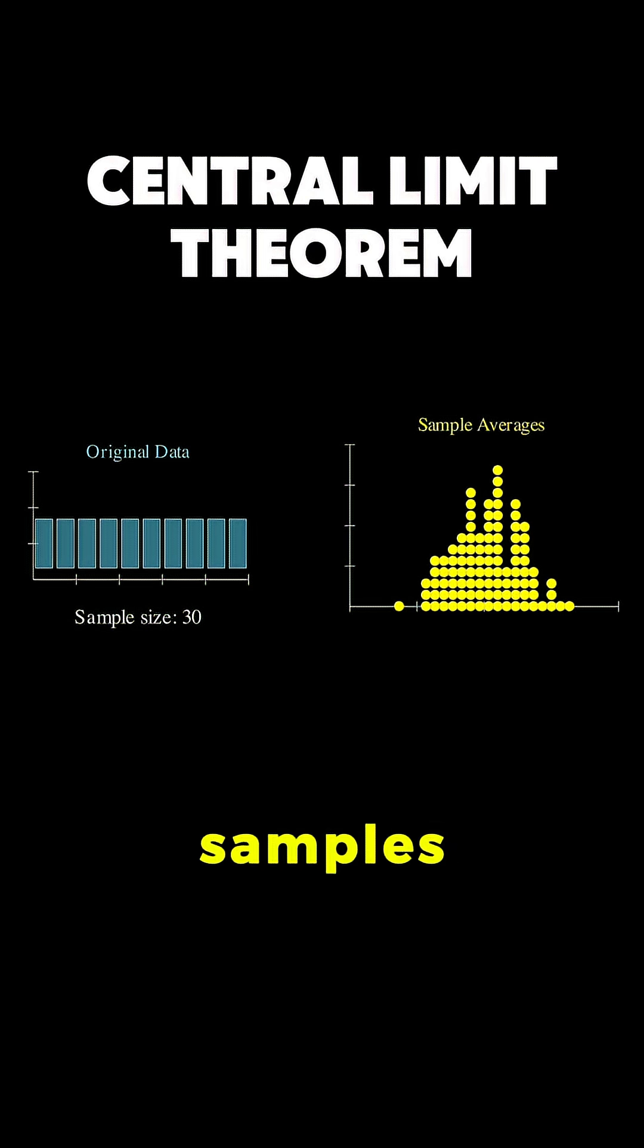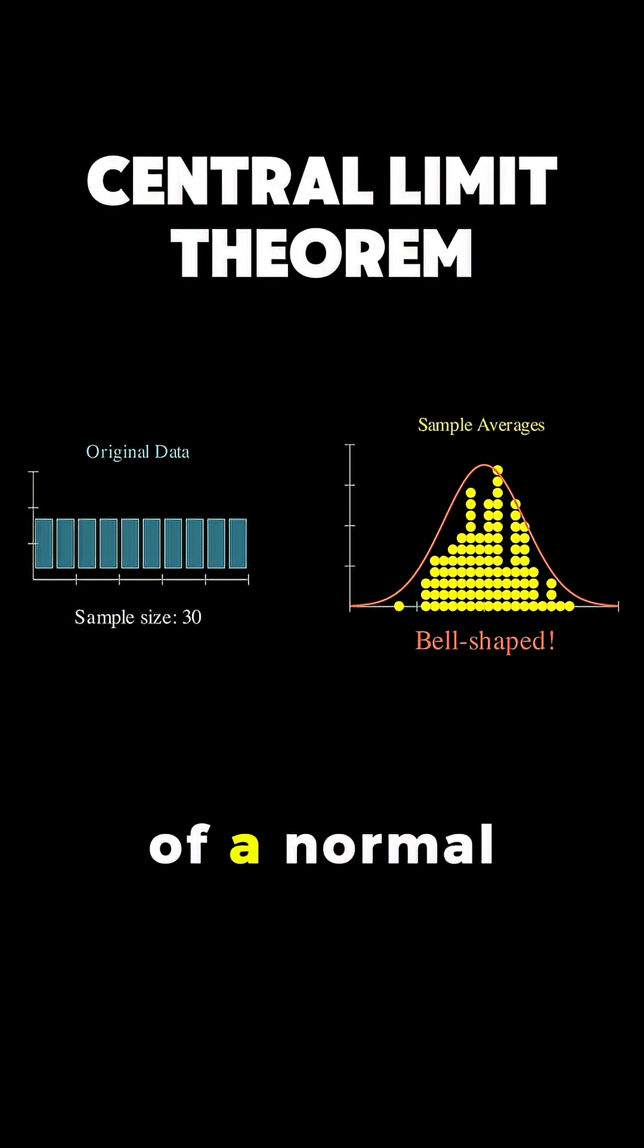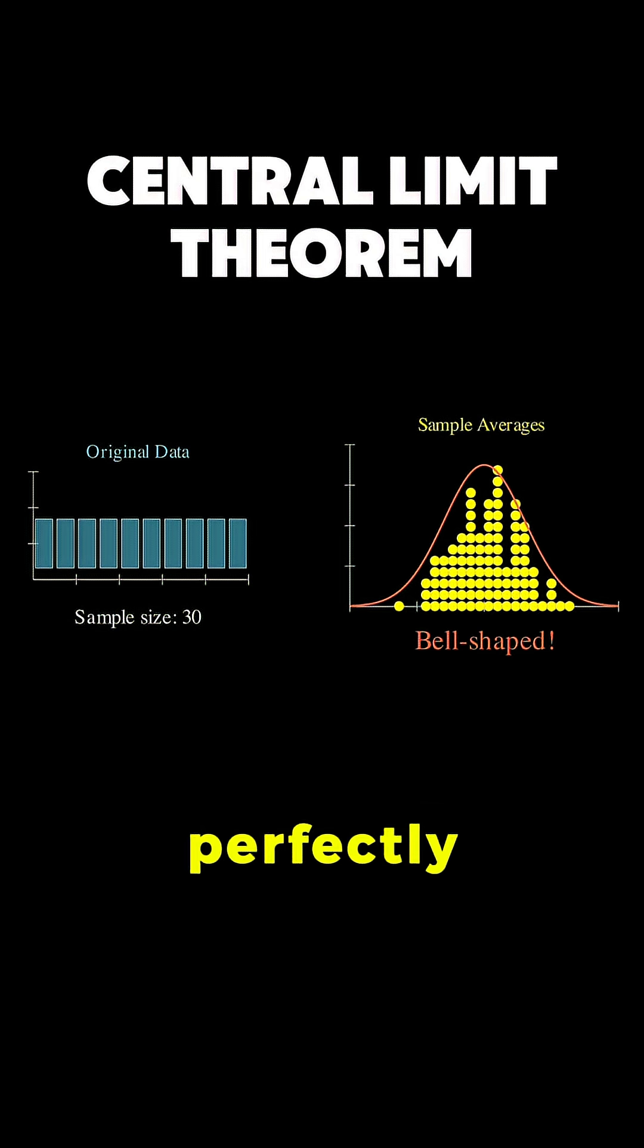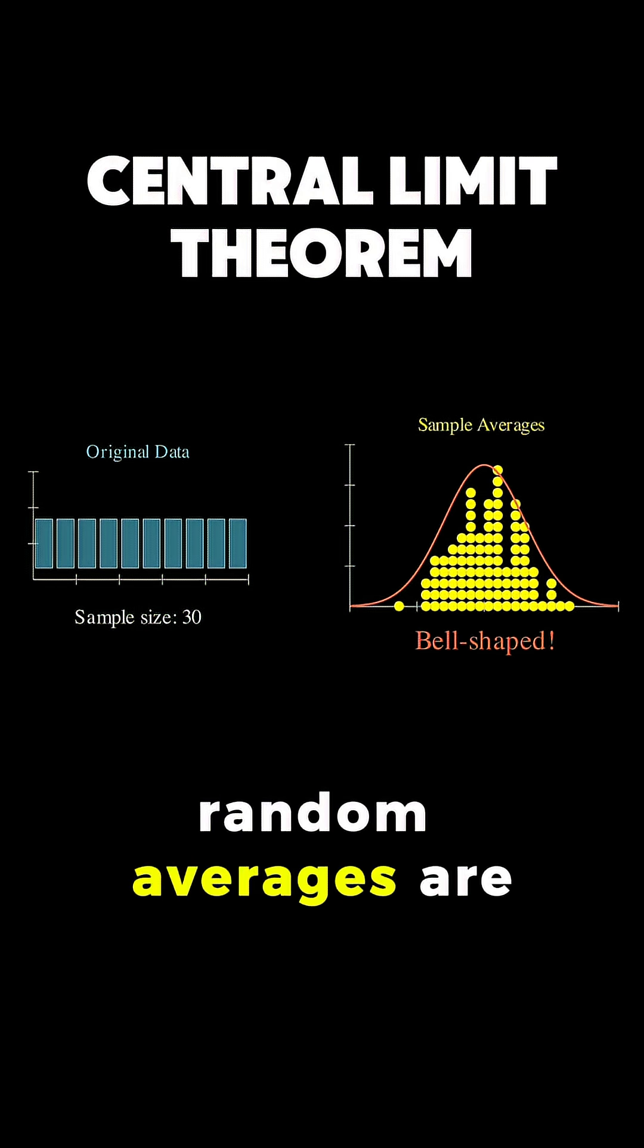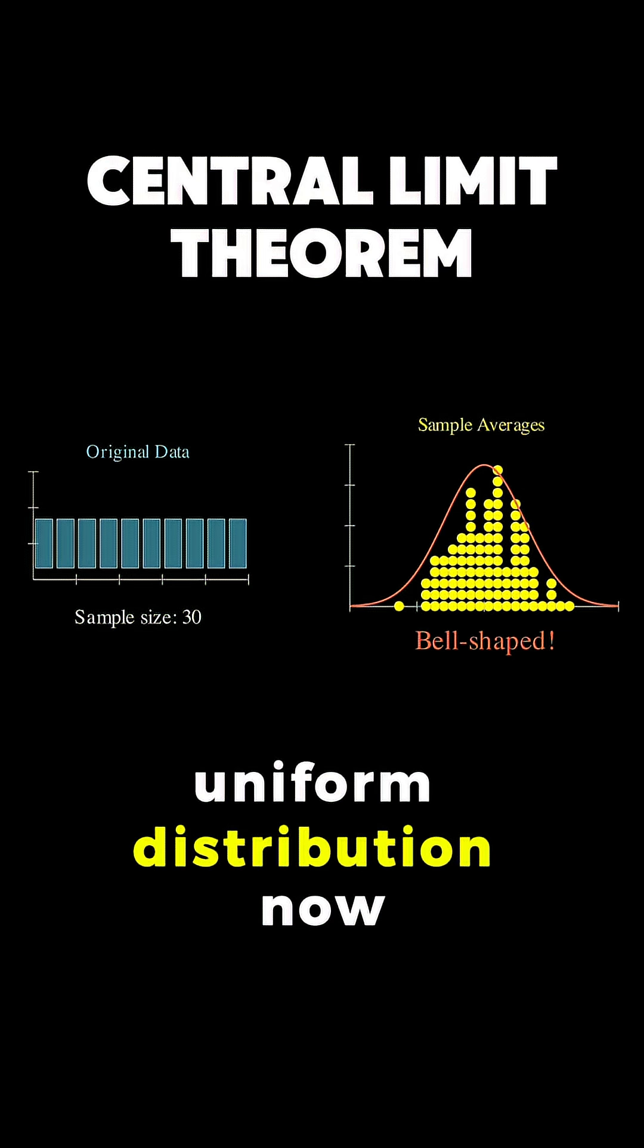After just 100 samples, you can already see the pattern emerging, and when we overlay the mathematical curve of a normal distribution on top, it matches almost perfectly, which means our random averages are following this specific bell-shaped pattern, even though we started with a completely flat, uniform distribution.